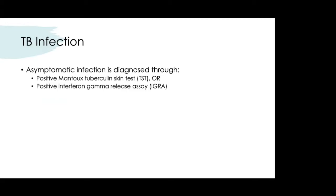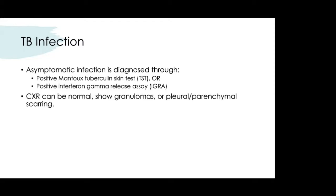There are two methods to test for TB infection. One is the PPD or tuberculin skin test, and the other is the IGRA — the interferon gamma release assay. When diagnosing TB infection, the chest X-ray can be completely normal, or you may see cavitary lesions, granulomas, or pleural parenchymal scarring.